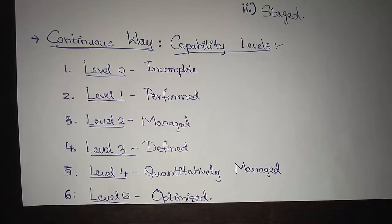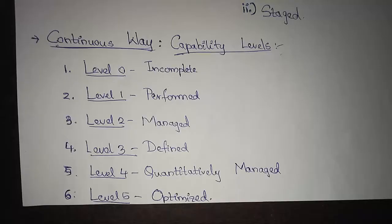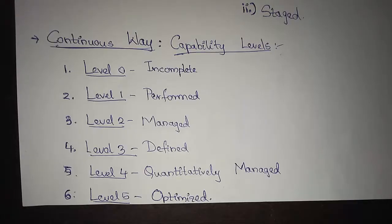In the continuous model, a process area is built or completed in six levels. The first level is called Incomplete — the process area is either not performed or does not achieve all the goals and objectives defined by the CMMI for that level.